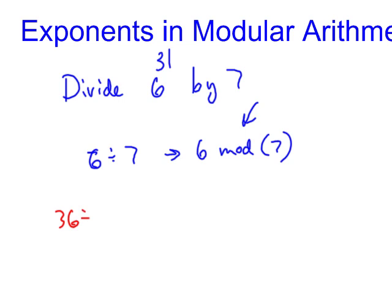Well, we'll go ahead and make a little bit of a chart here. And so we're going to have 36 divided by 7 is equivalent to 36 mod 7, because we just multiplied this by 6, because we can do that. And 36 mod 7 is going to be equivalent to 6 mod 7.